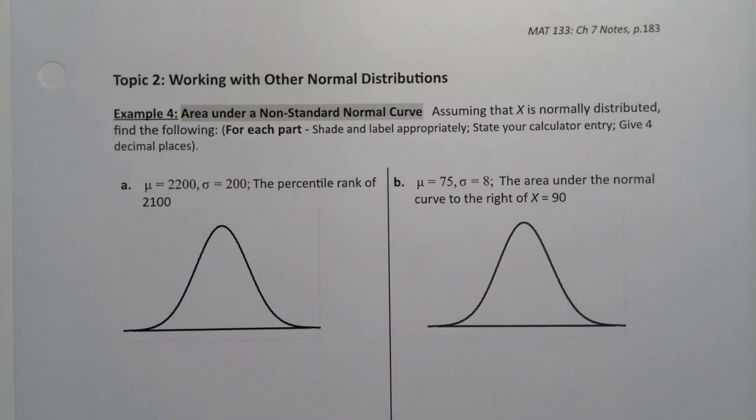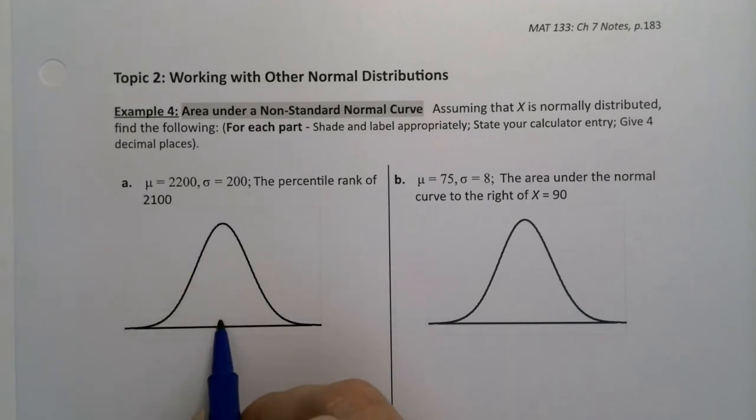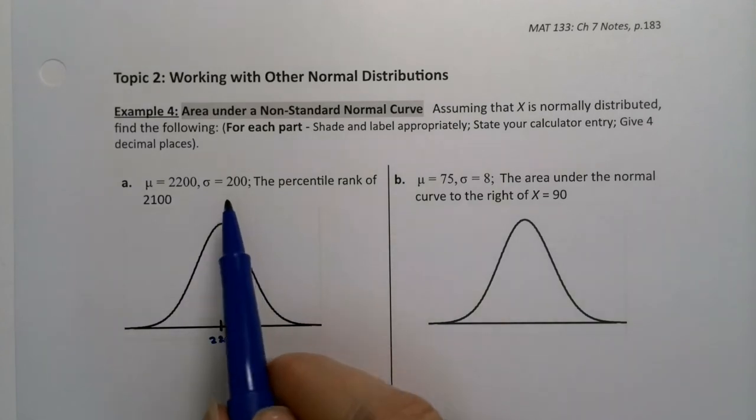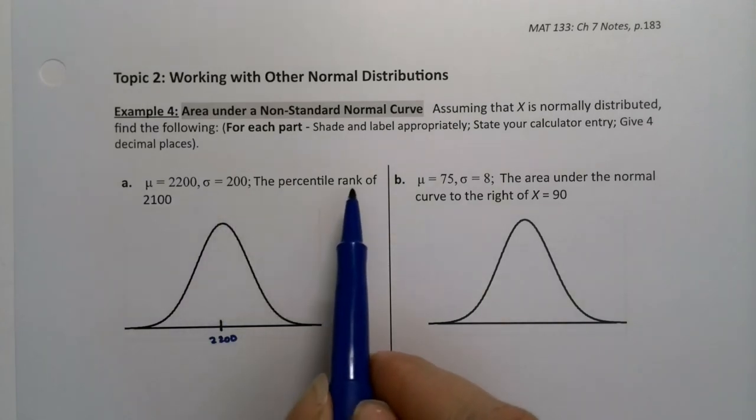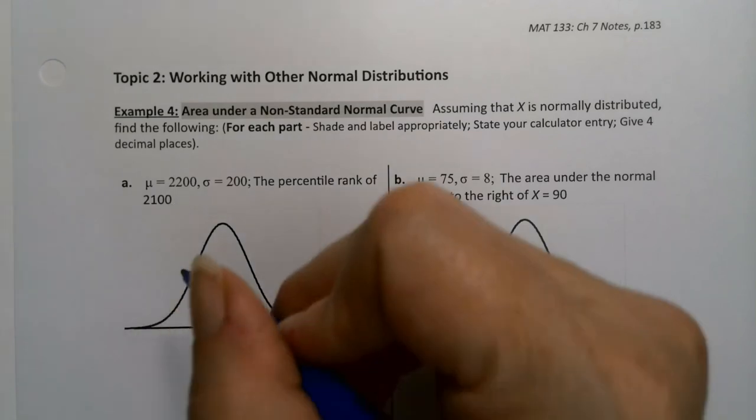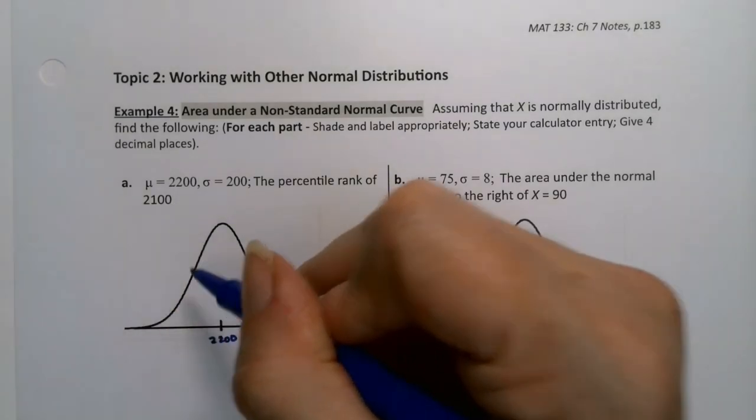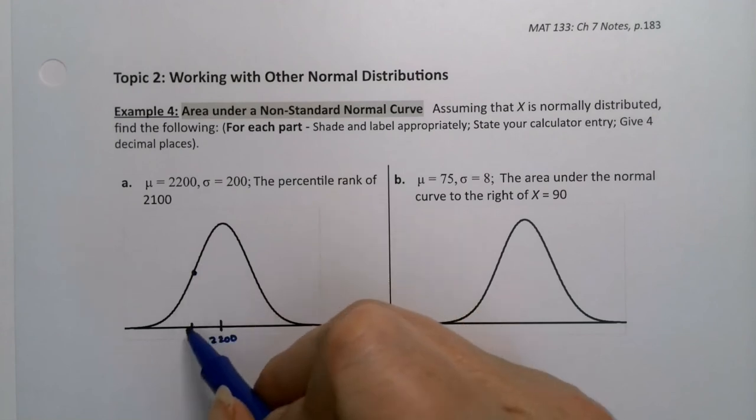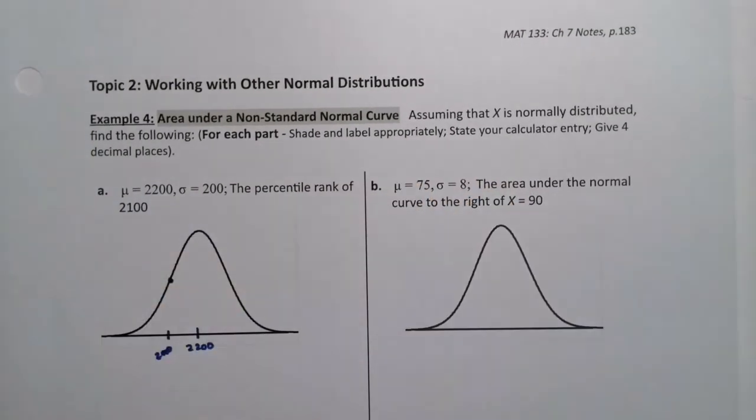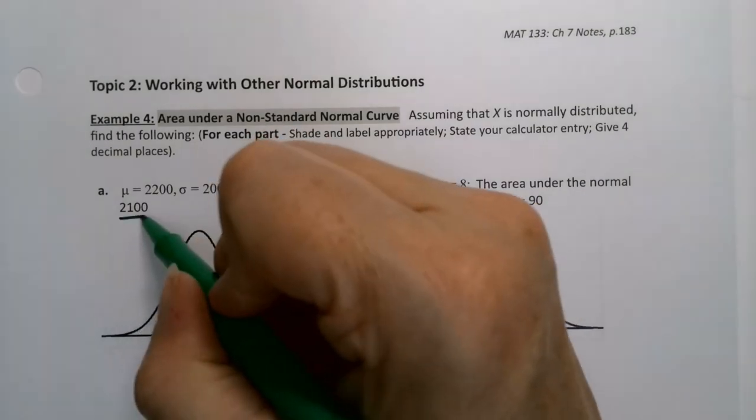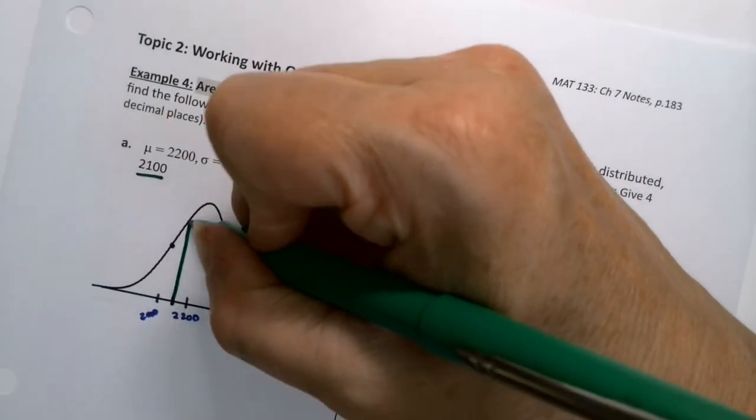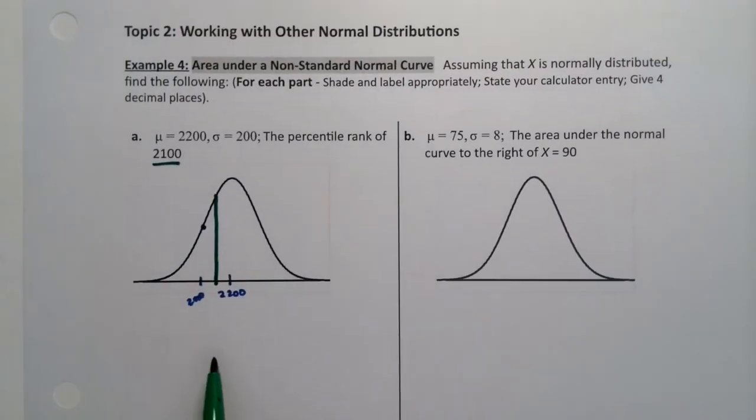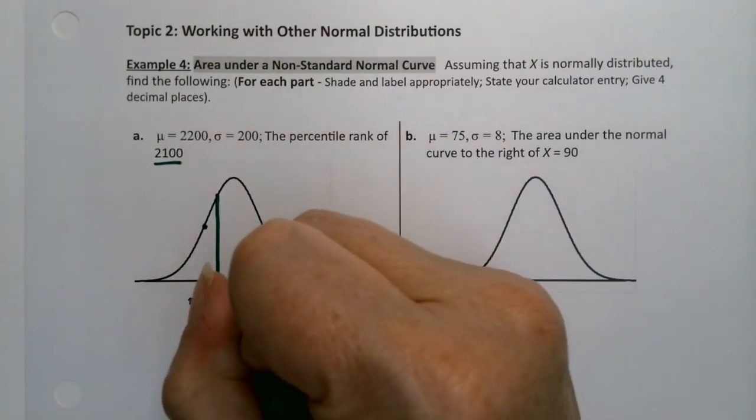We're going to have to shade appropriately and all that good stuff. So that portion of it's not changing. So we have this particular problem. The mean is 2200, so that would be this piece right here. The center is 2200. And the standard deviation is 200. And they want the percentile rank of 2100. So 2100 is this line right here going down the middle between 2000 and 2200. So that's 2100 right there.